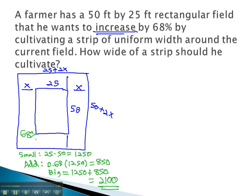Now that we know our total area, we're ready to multiply our width times our length to equal our area. 25 plus 2x times 50 plus 2x is equal to our area, 2,100.